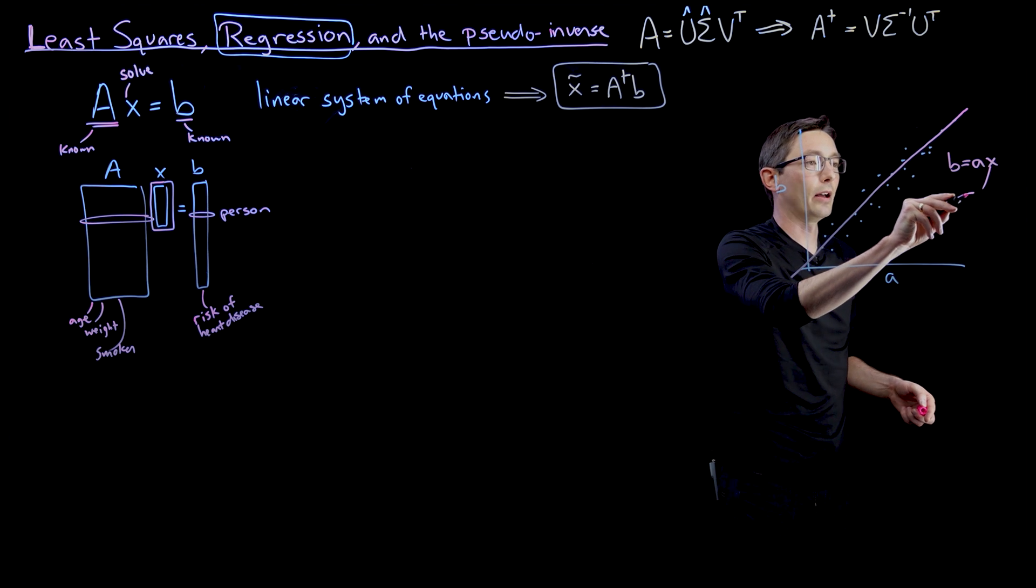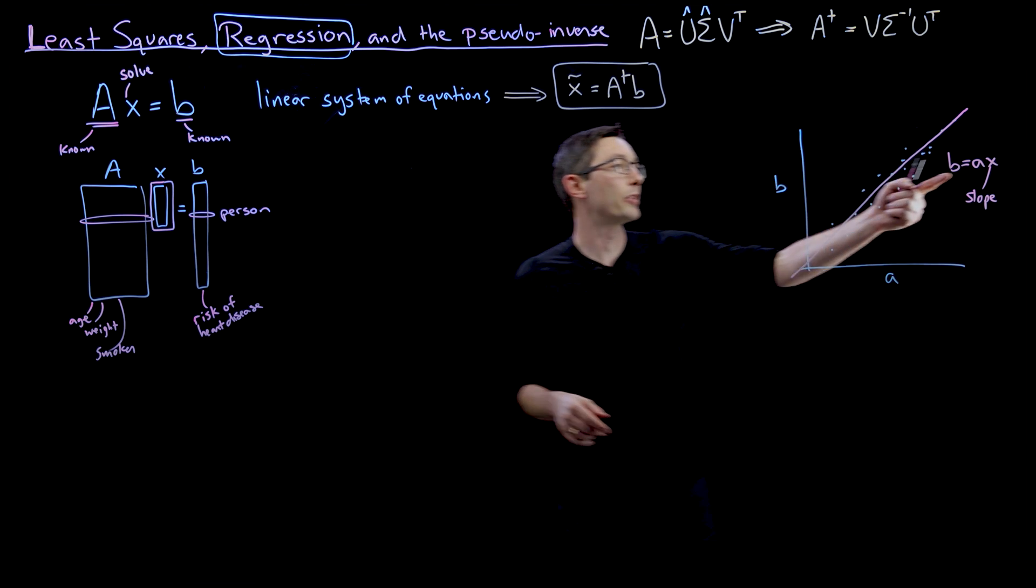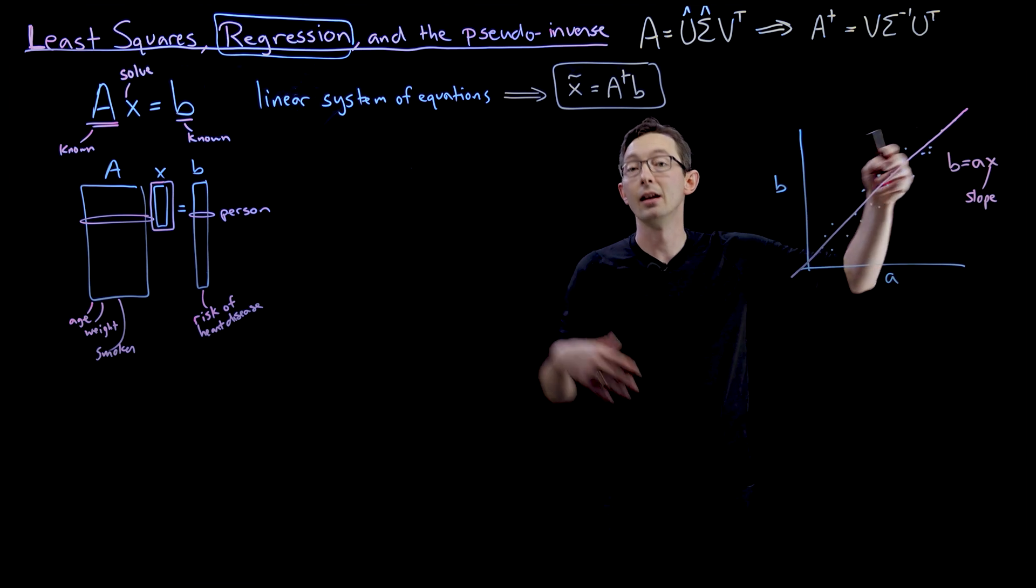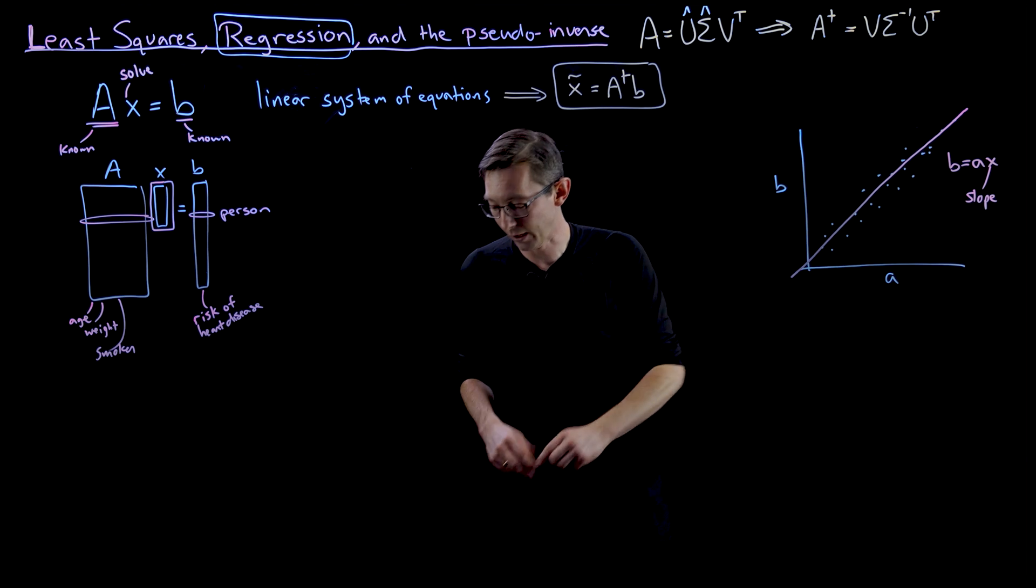And the X here that we want is the slope of this line. So we're going to be solving for that X, for the slope of the best fit line, using linear regression, least squares regression in one dimension.